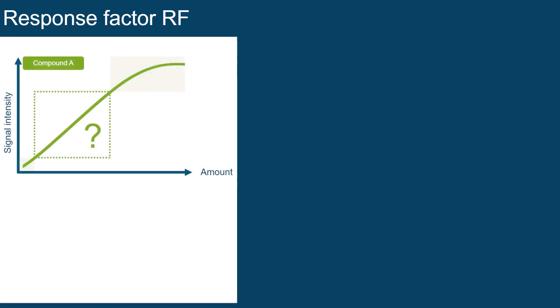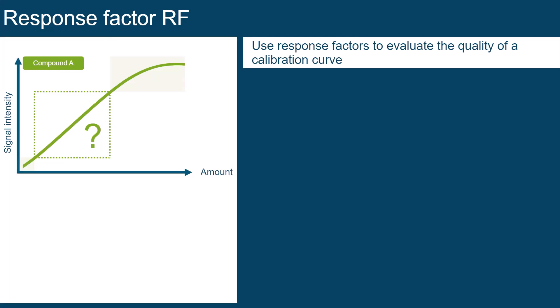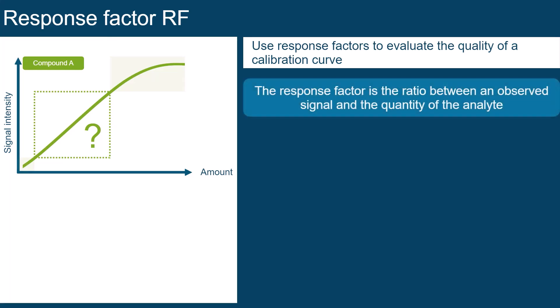But how can we be sure that we are working within the linear range? The response factor can help. It is the ratio between an observed signal and the quantity of the analyte, or in mathematical terms, the response factor equals area divided by amount.